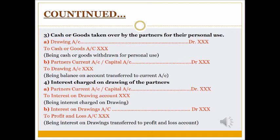For interest charged on drawings: Partners Current Account debit to Interest on Drawings Account. The second entry is Interest on Drawings to Profit and Loss Account. Remember: drawings and interest on drawings will appear on the debit side of Partners Capital or Current Account.